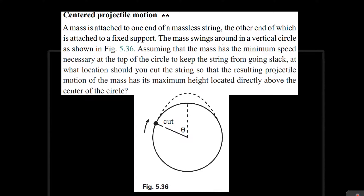In this problem, we need to find the angle such that when this thing is cut off from the rope, it's going to fly away. We need to find theta such that it reaches the maximum right above the center of the circle. We're given that it has the minimum speed such that when it's at the top of the circle, the string is not going to go slack.